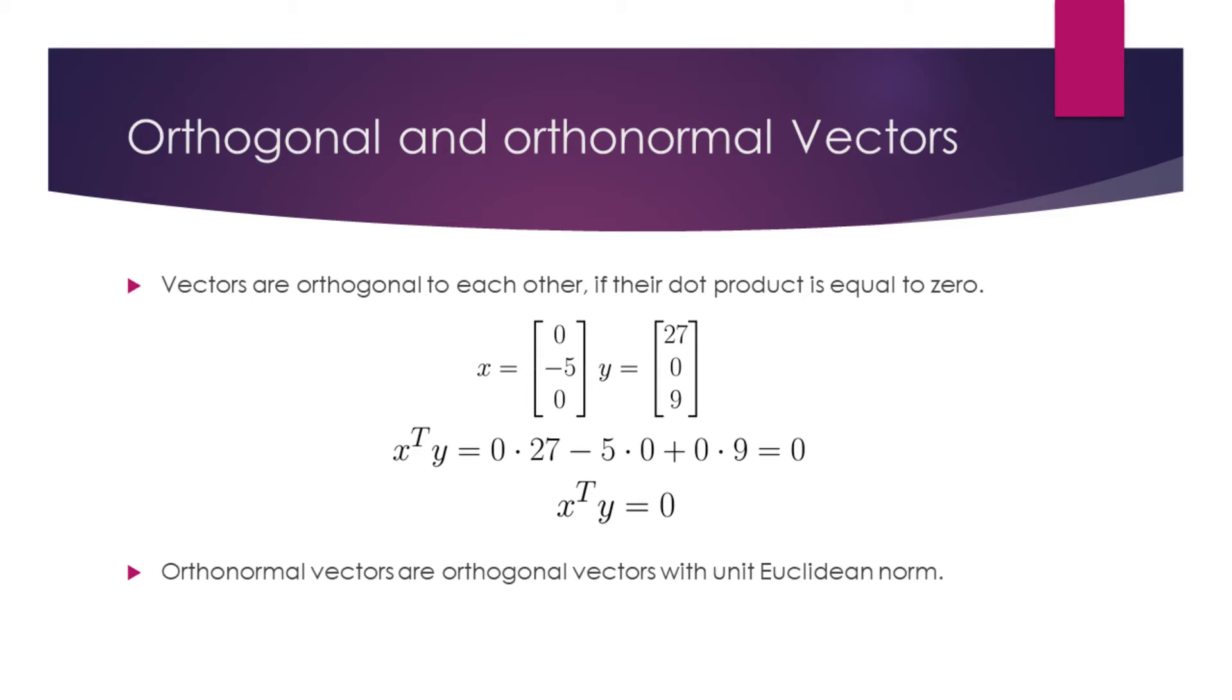Orthonormal vectors are orthogonal vectors with unit Euclidean norm. If the vectors x and y both had a unit norm and were orthogonal, we would say that they are orthonormal.